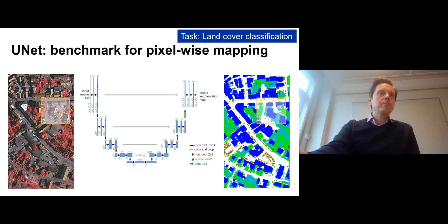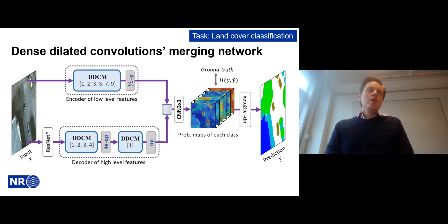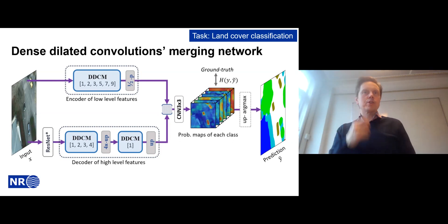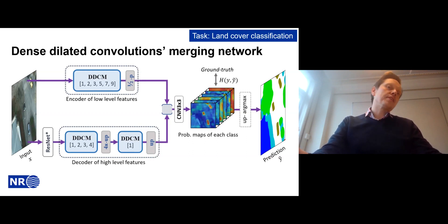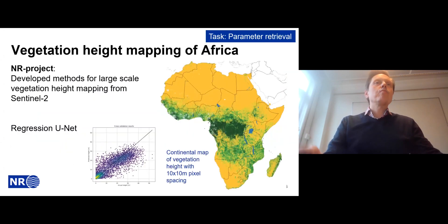Another architecture worth mentioning is the tensed-by-dilated-convolution merging network, or VDCM, developed by a PhD student. It uses dilated convolutions to have a large field of view and then merges the results. Its results are competitive with the U-Net, but I would recommend starting with a U-Net — if that doesn't work, something else is likely wrong, such as data quality.